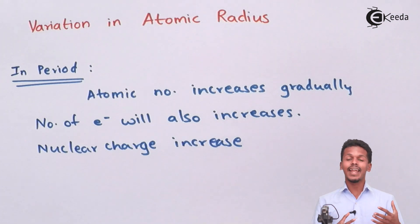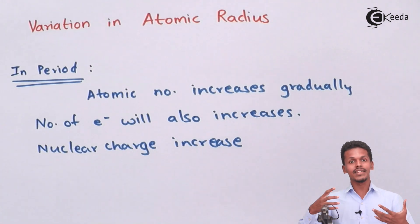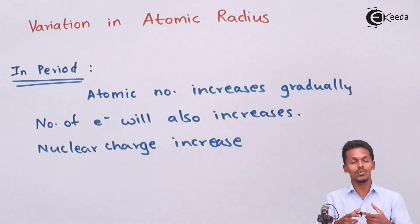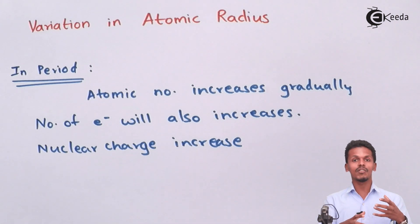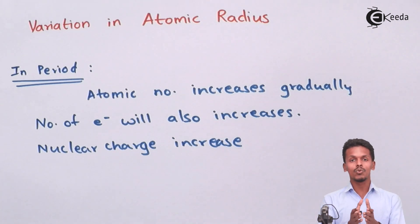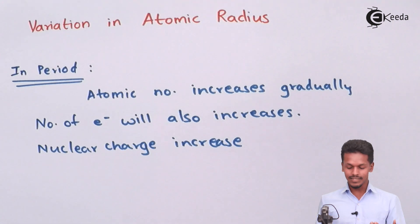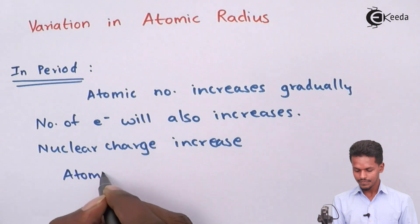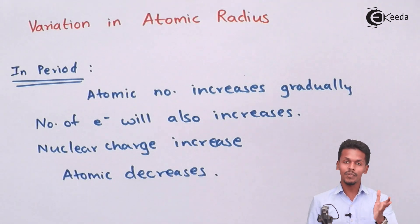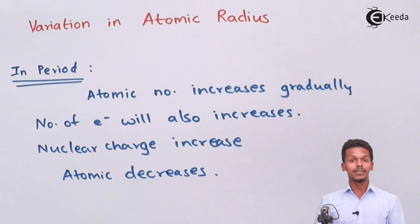The nuclear charge increases because the electrons are added up in the same shell. As the electrons in the outer shell increase as we move from left to right, the nuclear charge increases and they will have more attraction towards the central nucleus. So the atomic size decreases as we move from left to right in a period.